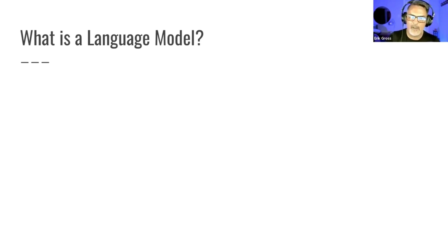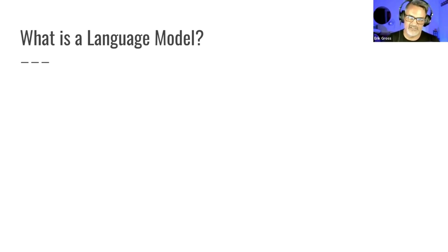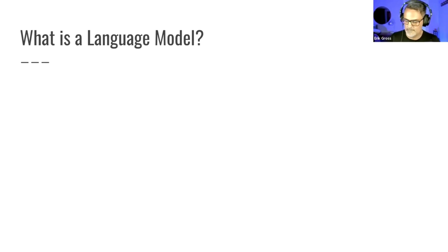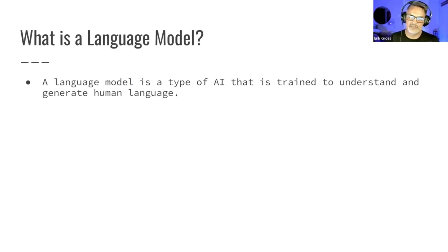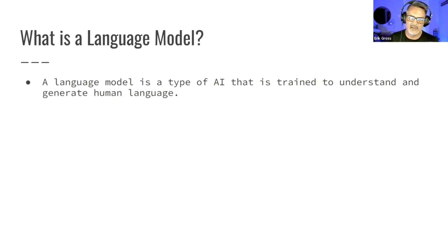And more importantly, computers cannot create something without being told to create it. These artificial intelligence tools have gotten so complex that it can look like they're thinking, but do not make the mistake of thinking they're doing so. The way they simulate that thinking behavior is pretty cool, but computers can't think. So what's a language model? It is a type of artificial intelligence trained to understand and generate human language. This type of computer program is trained on human language, and we'll go into what that training means in a bit.